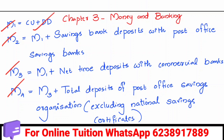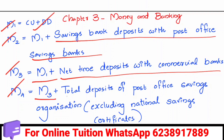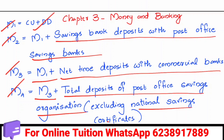Now we learn about measures of money supply. M1 is CU plus DD. M2 is M1 plus savings bank deposits with the Post Office Savings Bank. M3 is M1 plus net time deposits with commercial banks. M4 is M3 plus total deposits of Post Office Savings Organization, excluding National Savings Certificates.